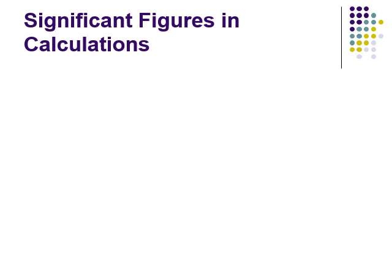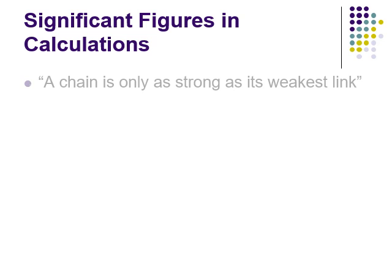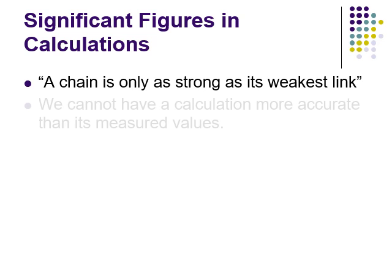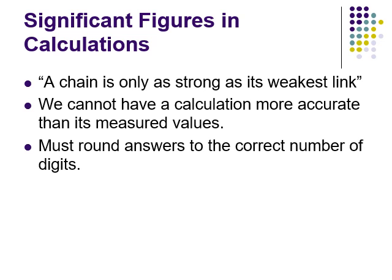Now that we know how many significant digits a number has, we focus on how to calculate with them. The guiding principle is: a chain is only as strong as its weakest link. We cannot claim more accuracy than the numbers that go into our calculation — that would be dishonest. So we need to round answers to the correct number of significant digits.